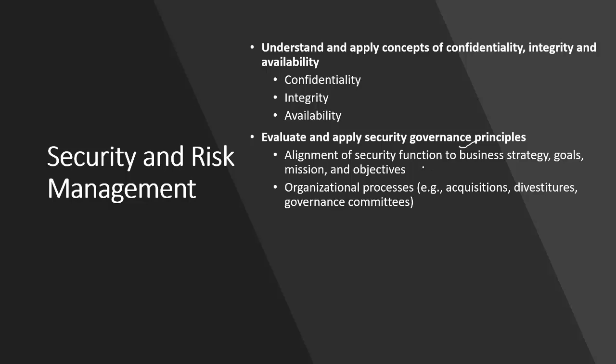In CISSP we cover security governance. The most important thing about security governance is that anything you introduce must map with the business strategy, goals, missions, and objectives. For example, introducing a firewall must be within the cost of business requirements; introducing any encryption solution must meet the business requirement. A good security strategy is one that is aligned with business objectives — effective security governance is validated only if it maps with the business objective.